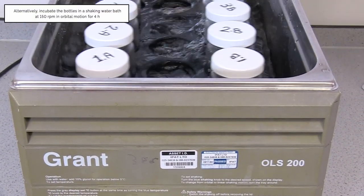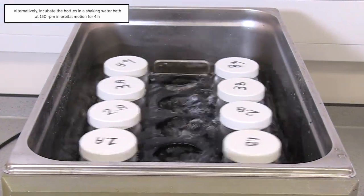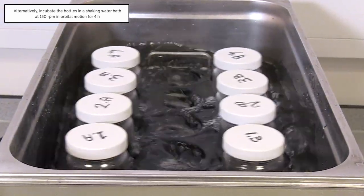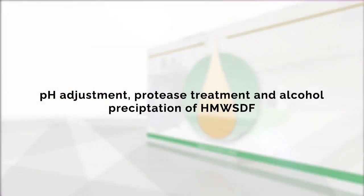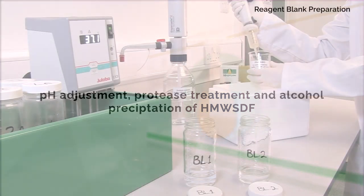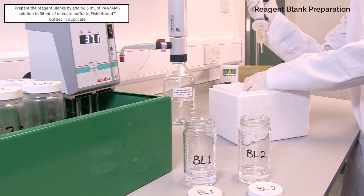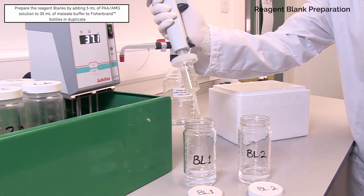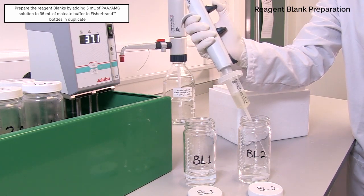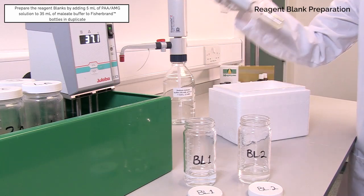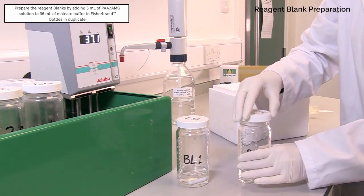Cap the bottles and allow the reaction to proceed with stirring at 170 RPM for exactly 4 hours. Alternatively, incubate the bottles in a shaking water bath at 150 RPM in orbital motion for 4 hours. While the samples are incubating, prepare the reagent blanks by adding 5 millilitres of pancreatic alpha amylase and amyloglucosidase solution to 35 millilitres of maleate buffer in Fisher Brand bottles in duplicate.